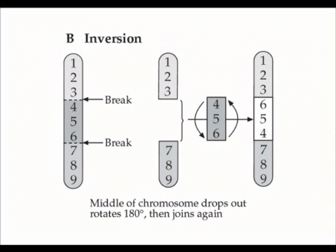Instead of having one, two, three, four, five, six, seven, eight, nine, we've got one, two, three, six, five, four, seven, eight, nine. So that's an example of an inversion mutation.